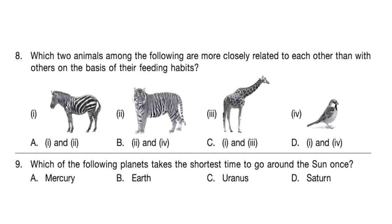Question 9: Which of the following planets takes the shortest time to go around the sun once? The correct answer is option A — Mercury. It is the closest planet to the sun, has the shortest orbit of all, and goes around the sun in 88 days.